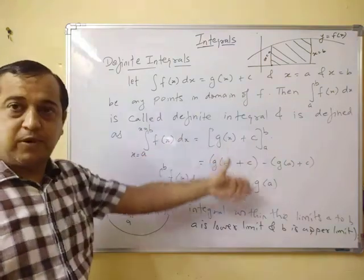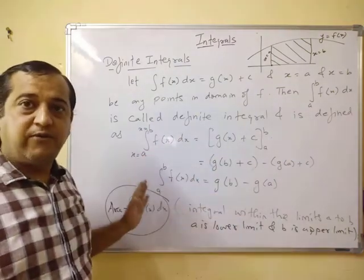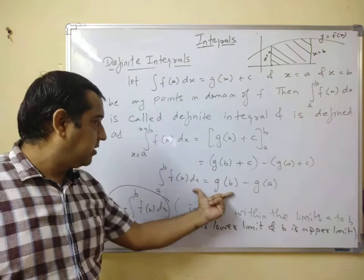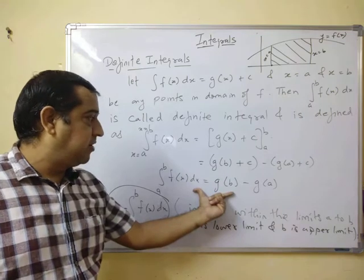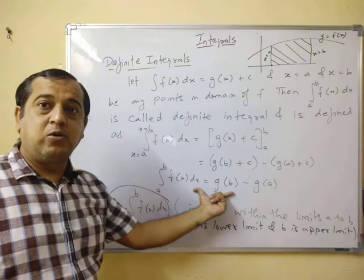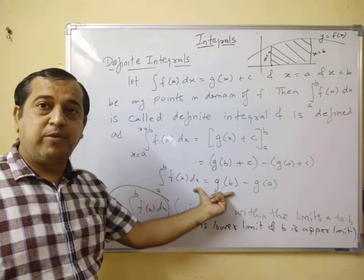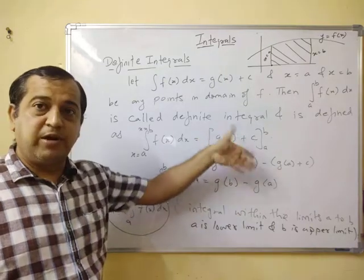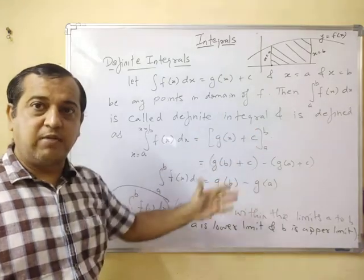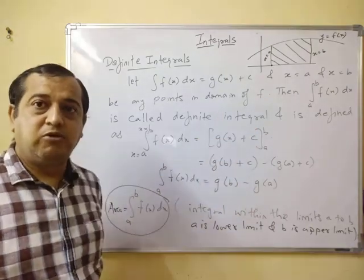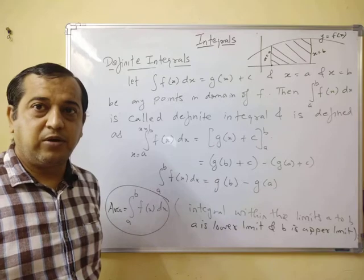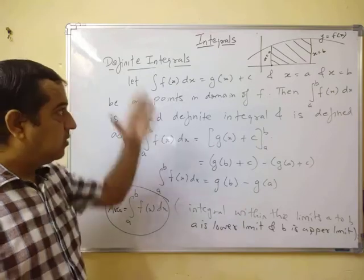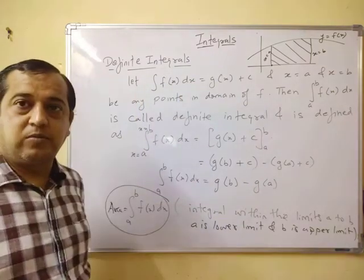So this is the concept of definite integrals. The most important part is: integral from a to b of f(x)dx equals g(b) minus g(a). You evaluate g(x) with the limit a to b, and that gives you g(b) minus g(a). Please note it down.